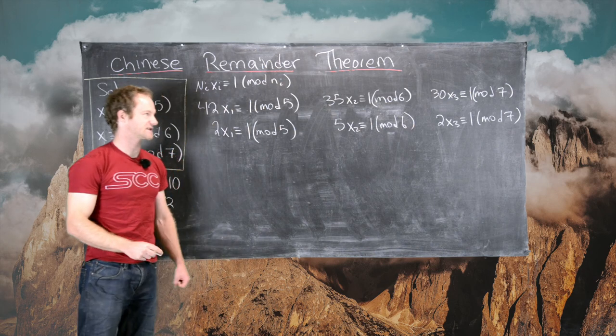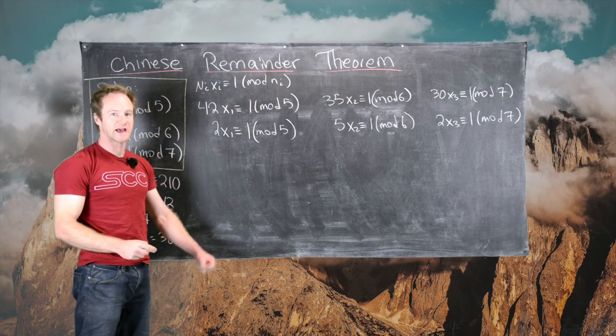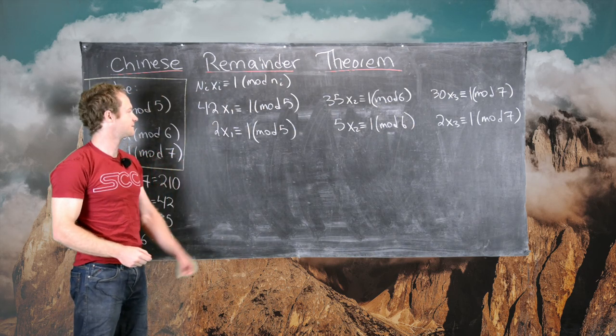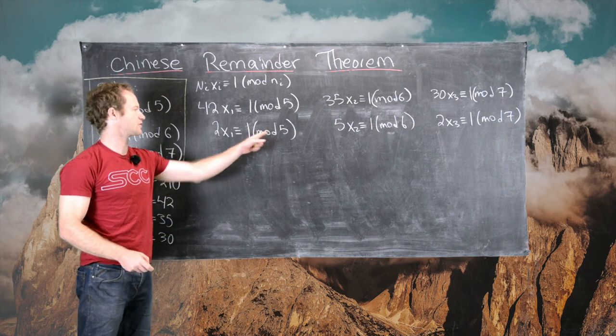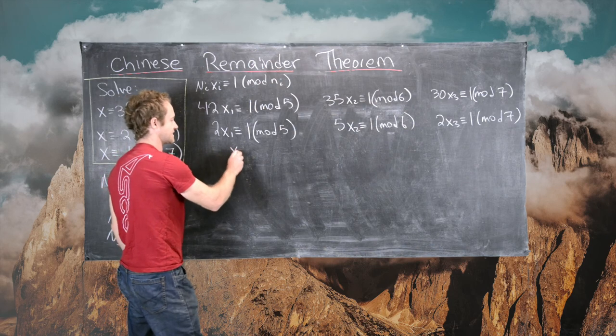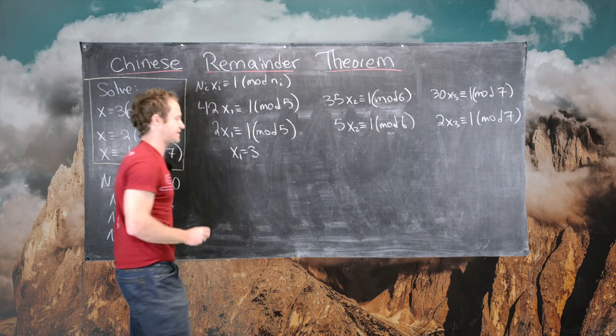And now since 5, 6, and 7 are pretty small, we can guess and check until we have inverses. So we notice that 2 times 3 is equal to 6, which is congruent to 1 mod 5, so this tells us that X1 is equal to 3.